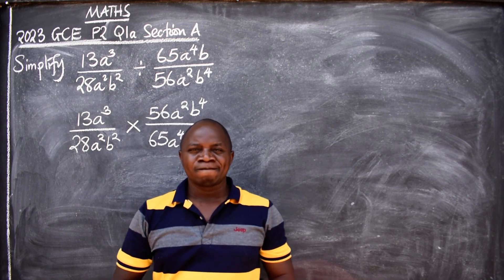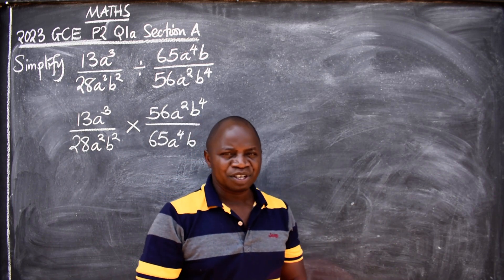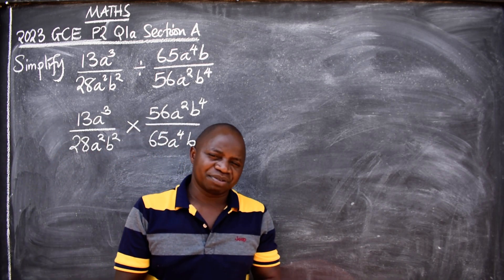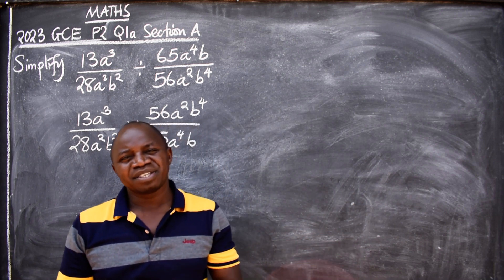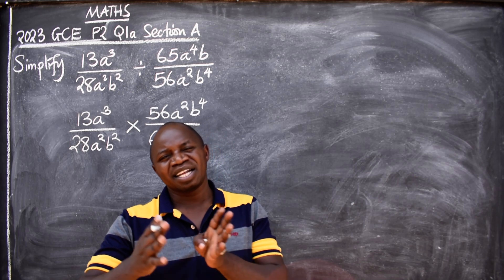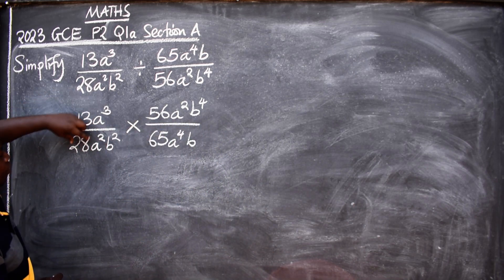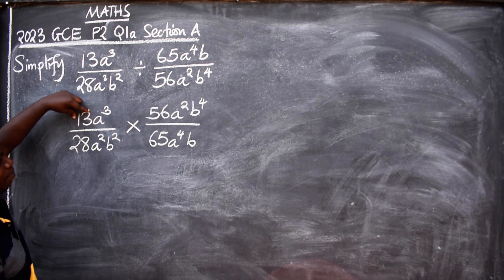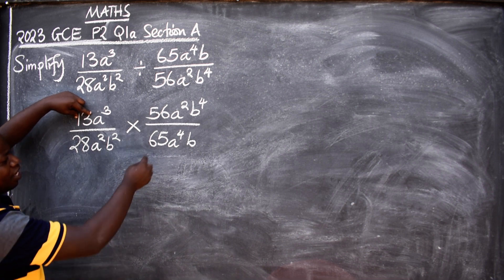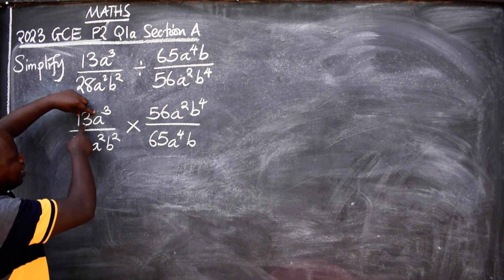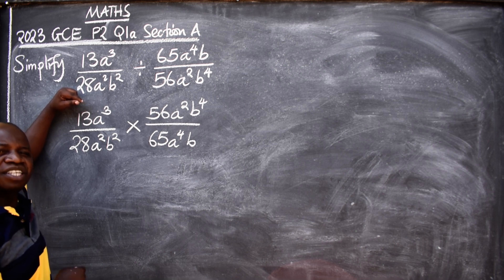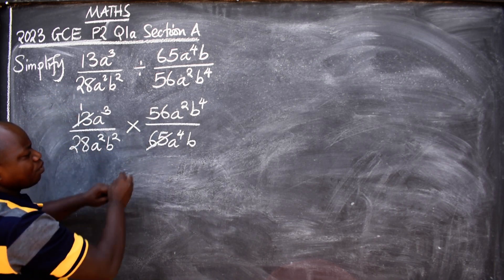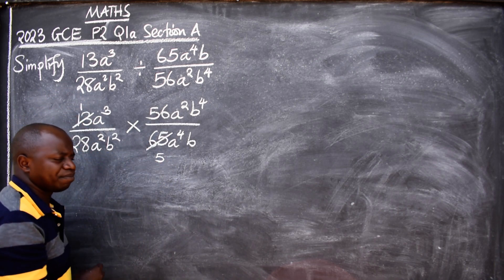We start with numbers. Here we have numbers and variables, so you start with numbers and once done you move to the letters. The numbers: what can I cancel here? We have 13 — this 13 can be cancelled with 65 because 13 can go into 65. How many times? 13 into 65 gives you five times.